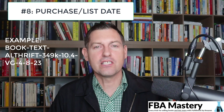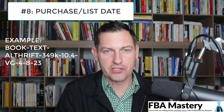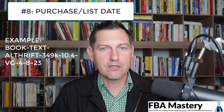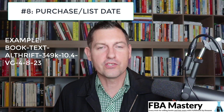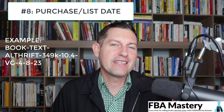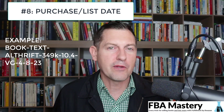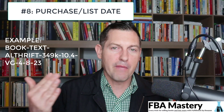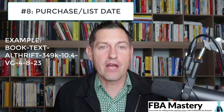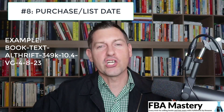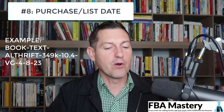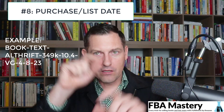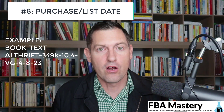Number eight: the date that you listed the item for sale or the date that you purchased it. This is probably among the least important ones you can put in your SKU because the listing date is always readily available — it's always there in your listing software and on your manage inventory page. Unlike most of the other attributes, this is never far away and you don't have to click anywhere to get it.